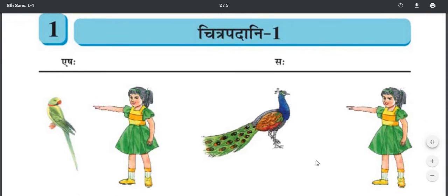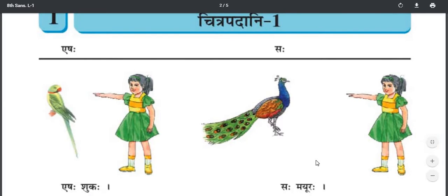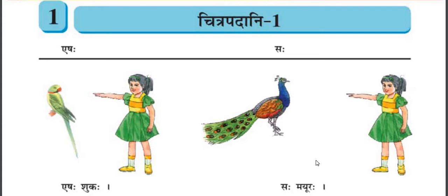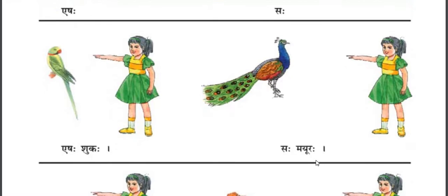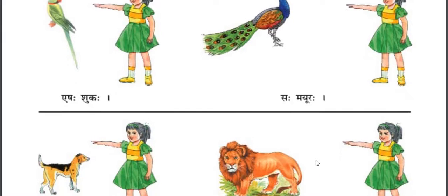So first is Eshaha and Saha. Both are related with Masculine or Male Gender, means Pulling. Eshaha and Saha ke Sarvanam se Pulling ko darshaya jata hai. So first is Eshaha — Eshaha Shukaha means 'This is a Parrot.' Saha Mayuraha — that is a Peacock.